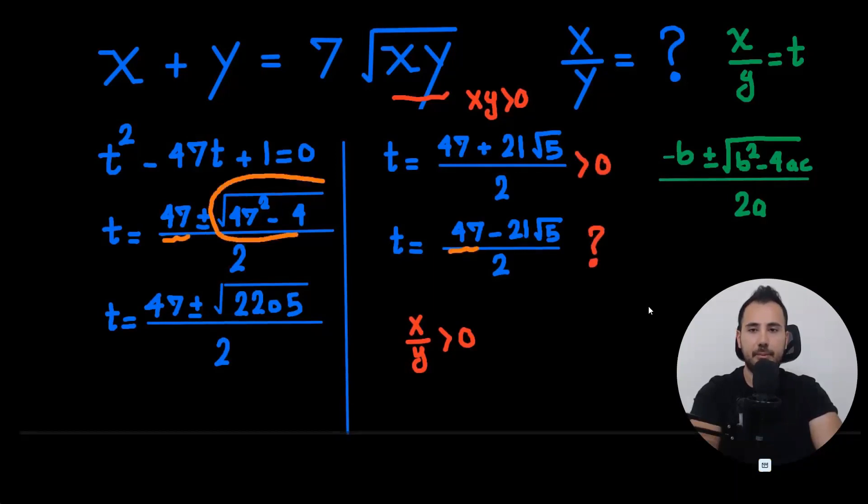Let's compare these two. So remember, this 21 square root of 5 was the result of this. And as you see, this is 47 squared minus 4. So this is just slightly smaller than 47.